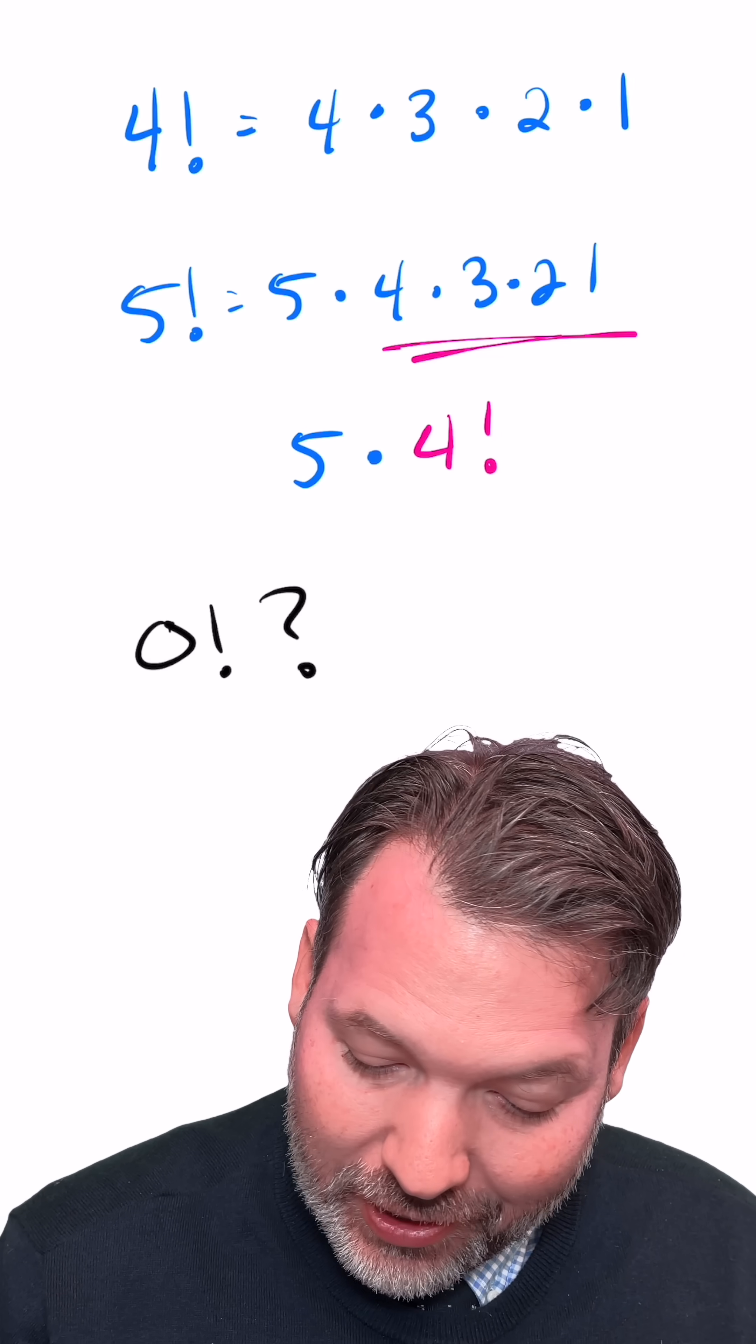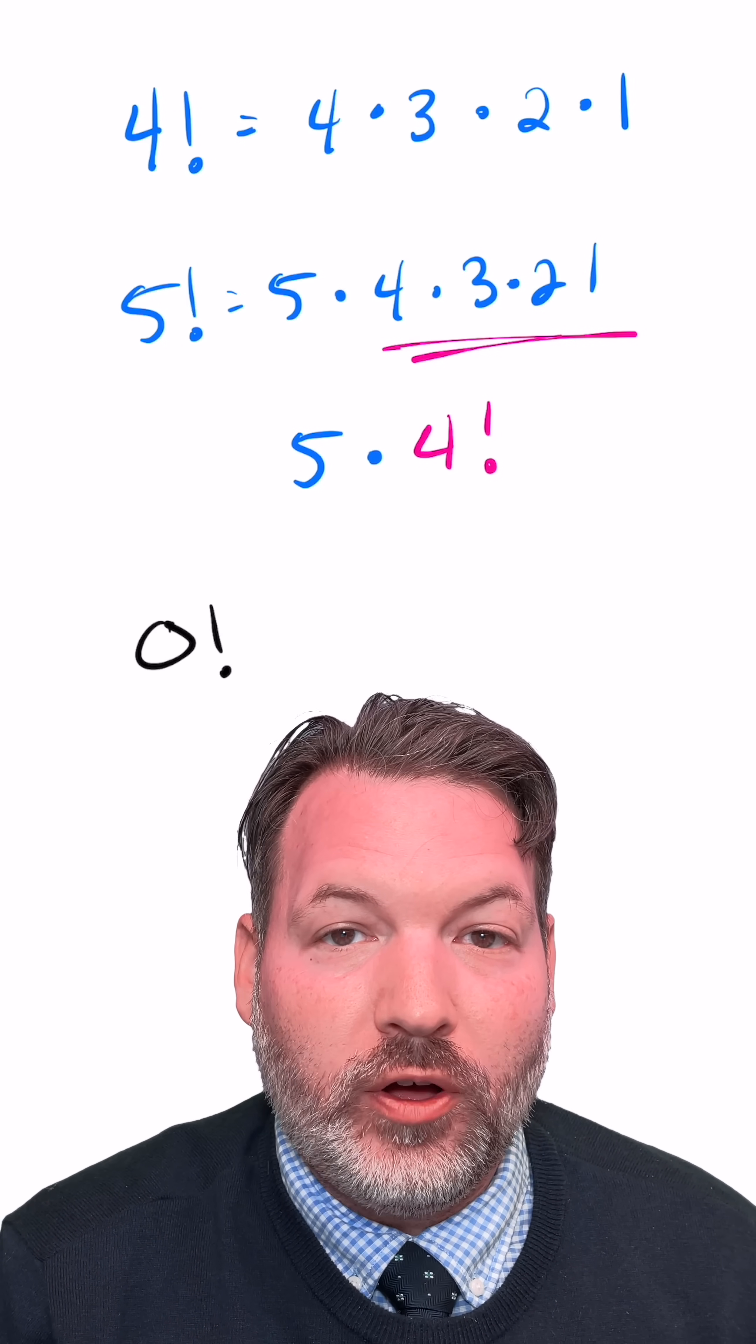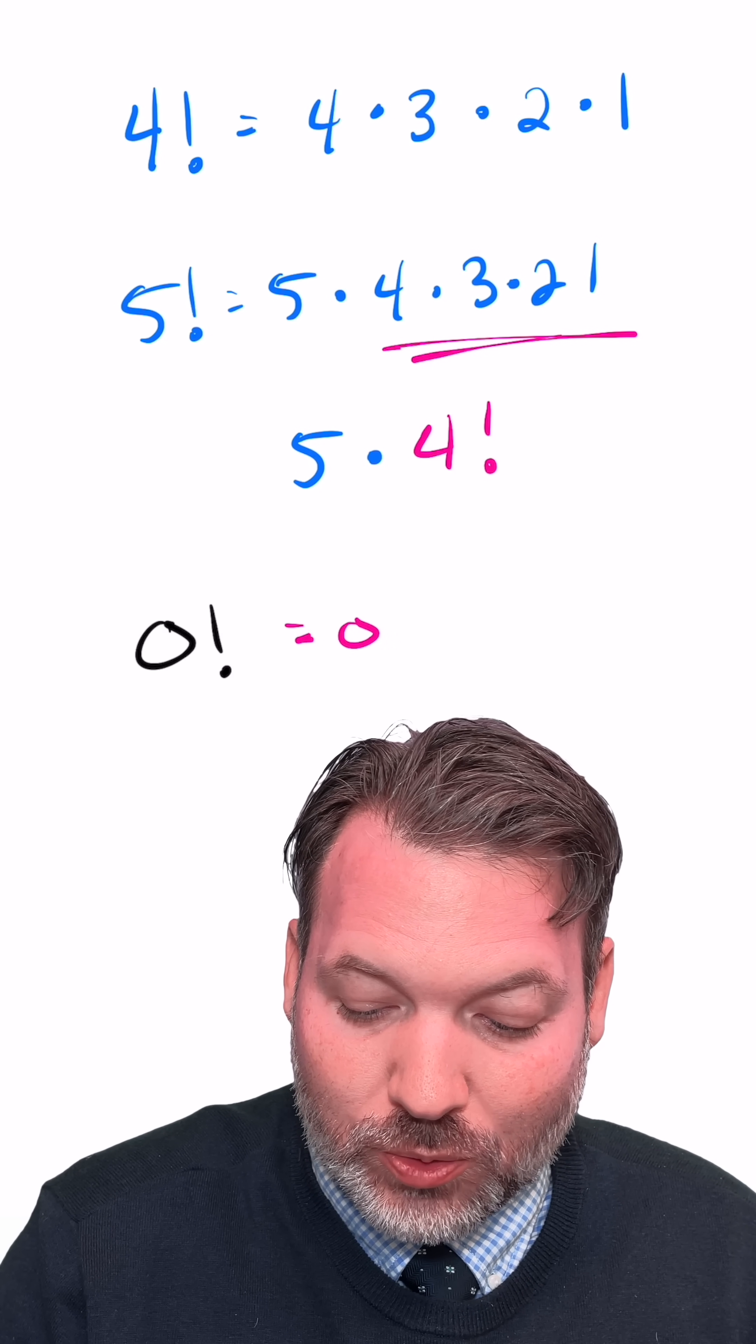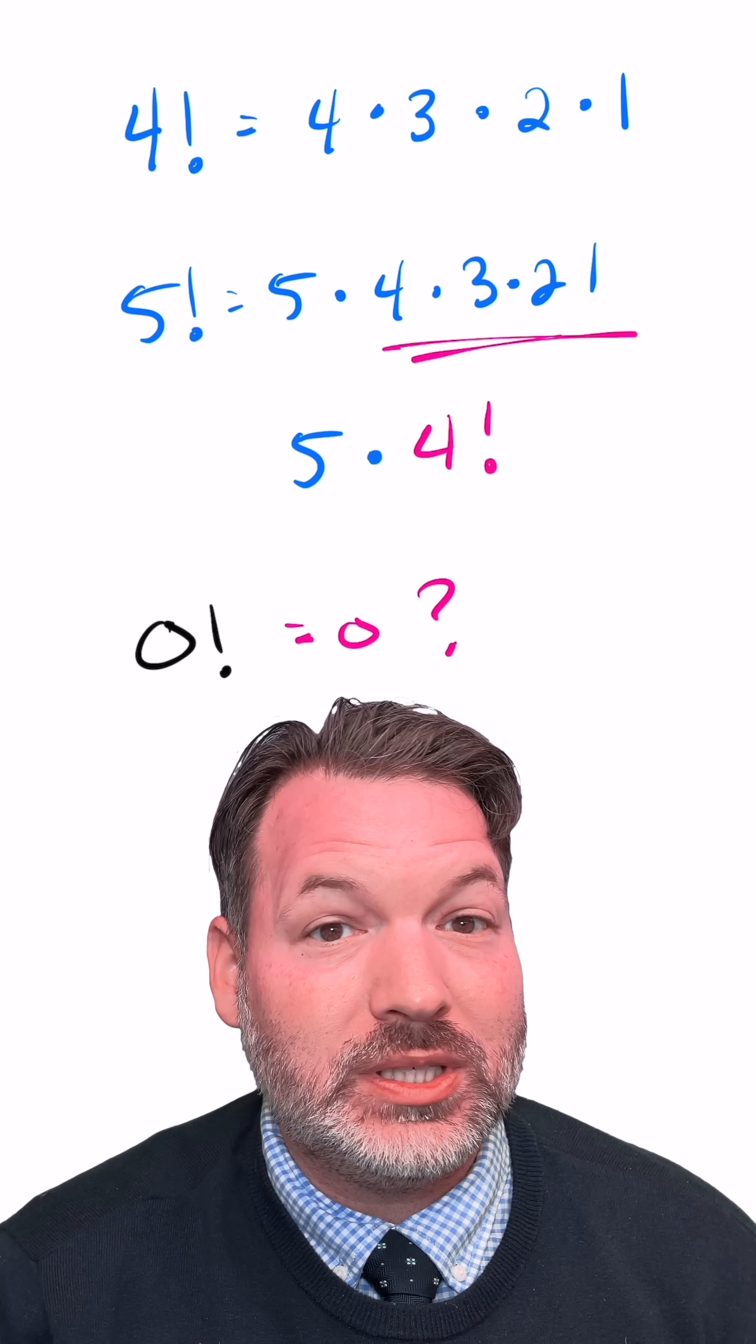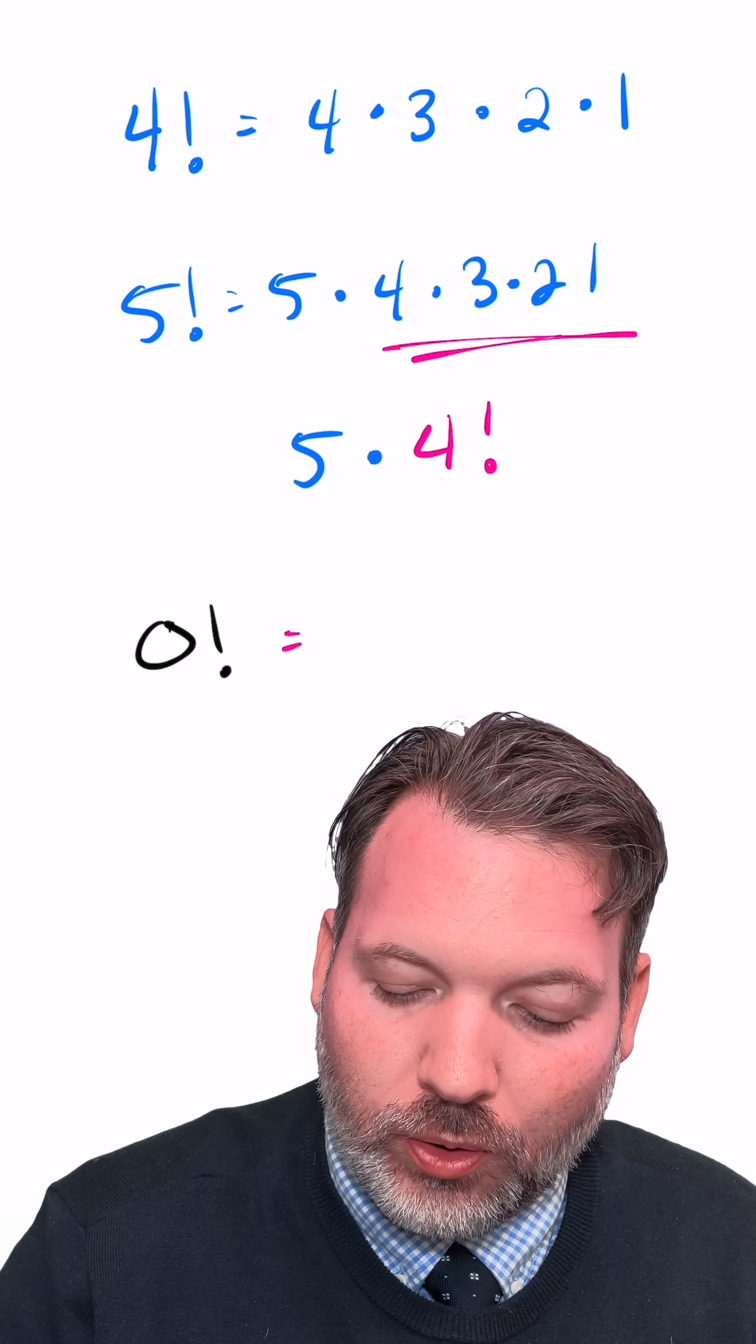But in fact there are lots of situations when we're doing combinatorics, where we're counting up different possible outcomes where zero factorial comes into play. You might also think, well since the factorial is all about products, anything involving a product and zero should be zero, so should we just call zero factorial zero? And the answer is no. It's actually best to call zero factorial one.